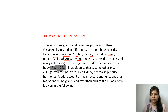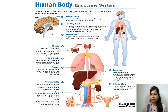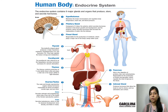In addition to the primary endocrine glands, some other organs such as the gastrointestinal tract, liver, kidney, and heart also produce some hormones. This is shown in the diagram of the human body illustrating organs that have endocrine-specific functions.